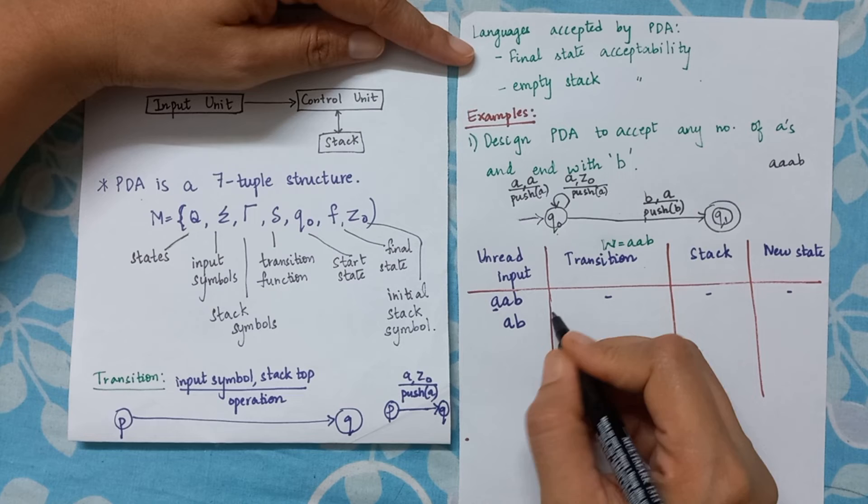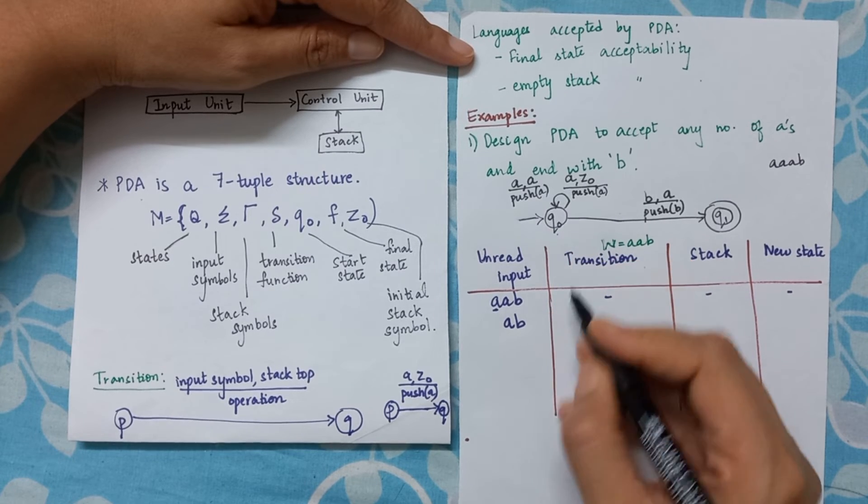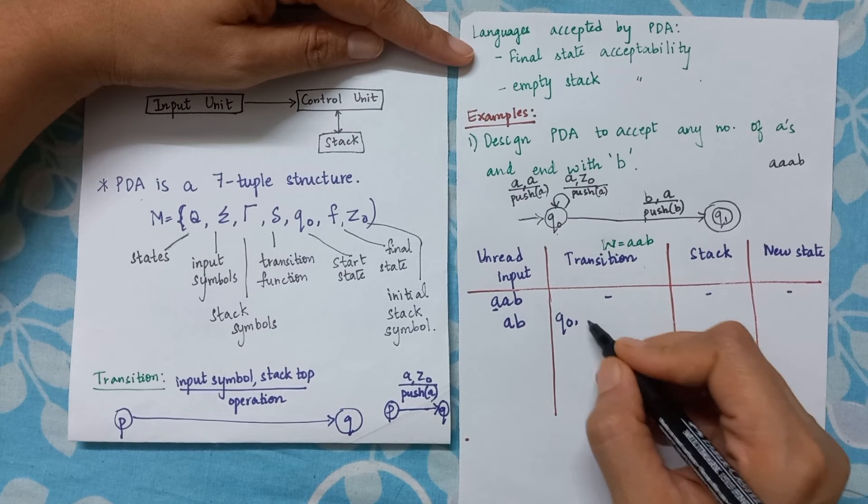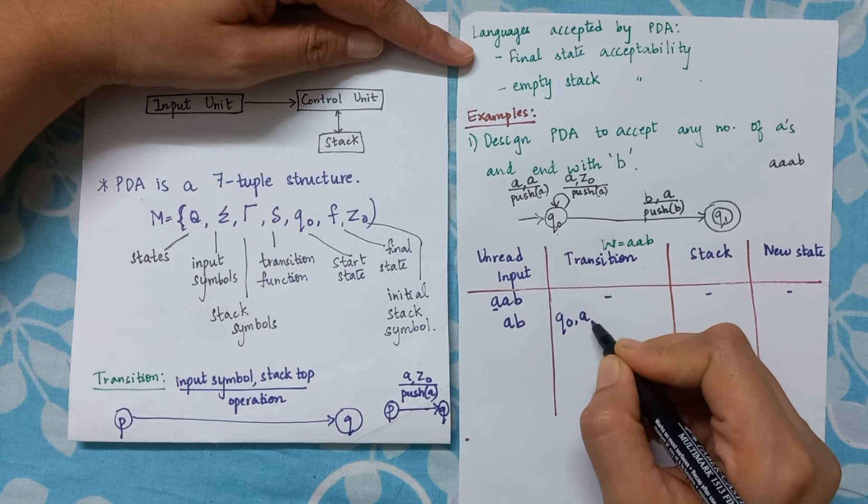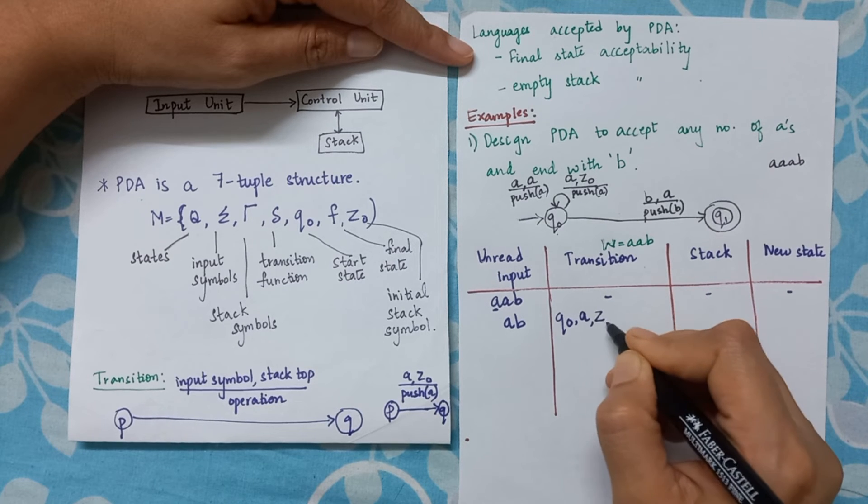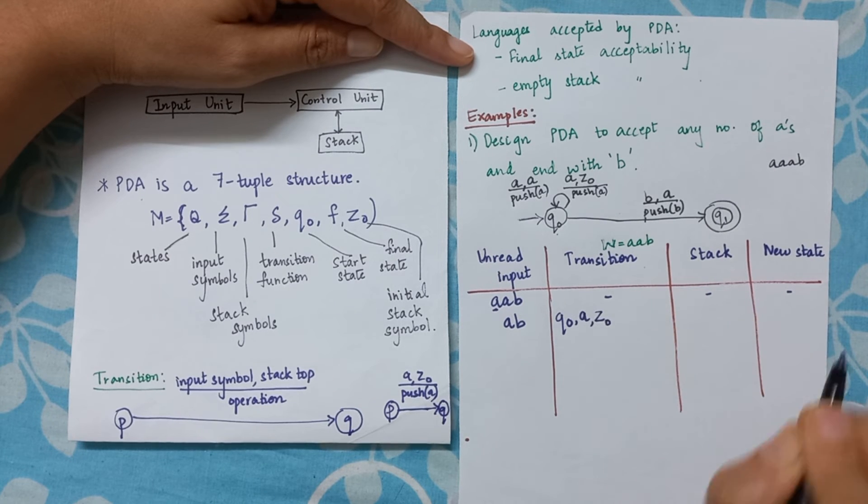Now what happens with this particular transition? Now in which state will I be in? I will be on q0. What am I reading? I read here 'a'. What is my initial stack symbol? My initial stack symbol is Z0.